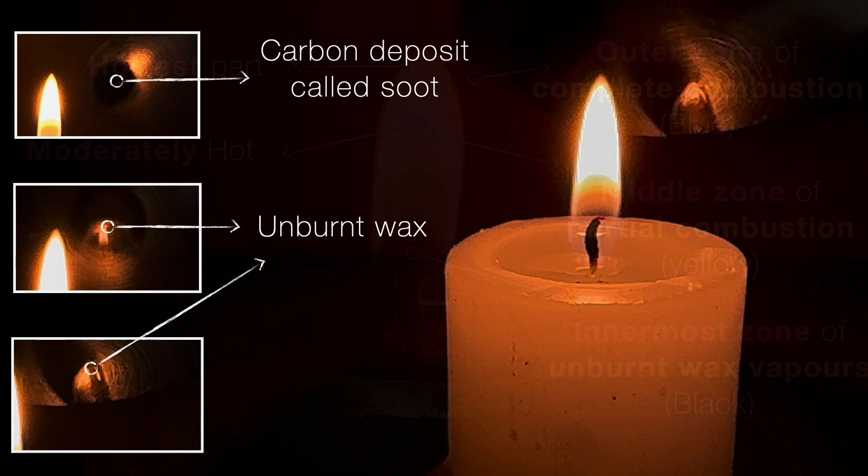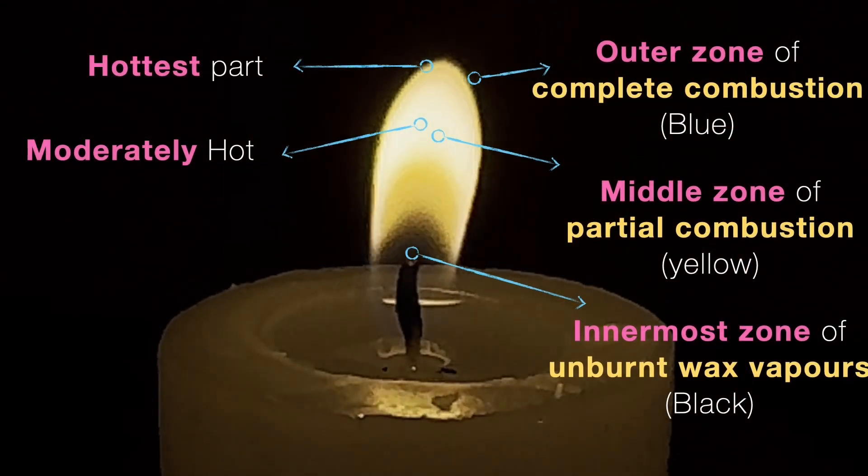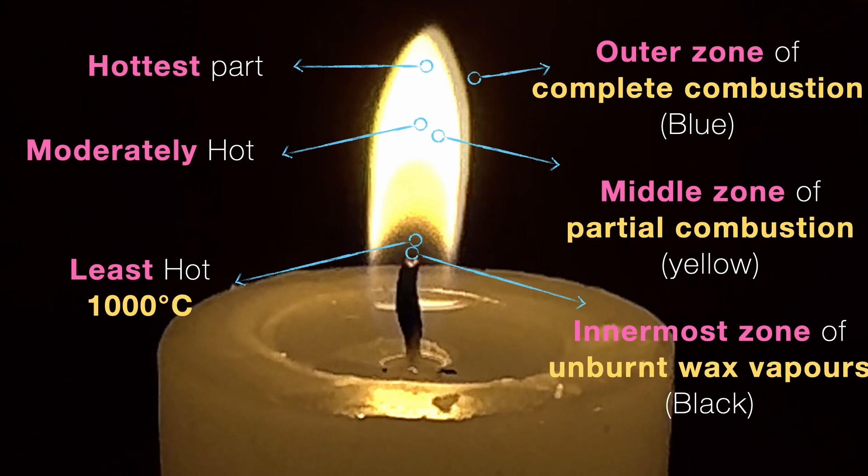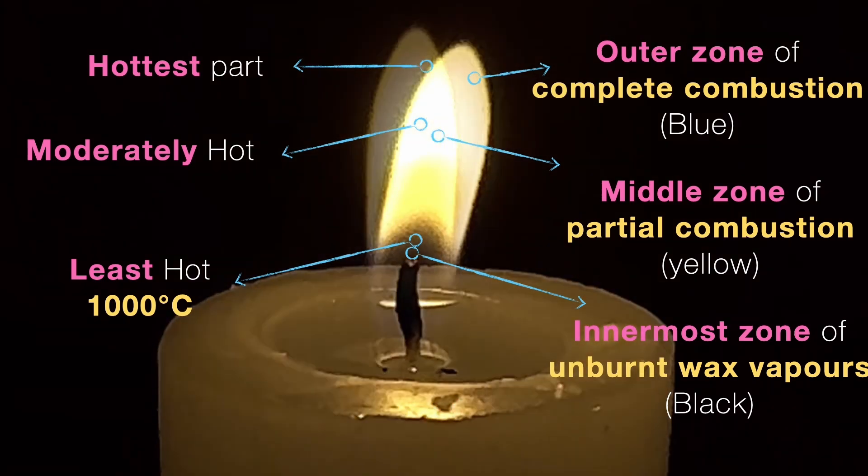And this is also the least hot part of the flame. The temperature of this inner zone is about 1000 degrees Celsius and is the coolest part of the flame compared to the other two.